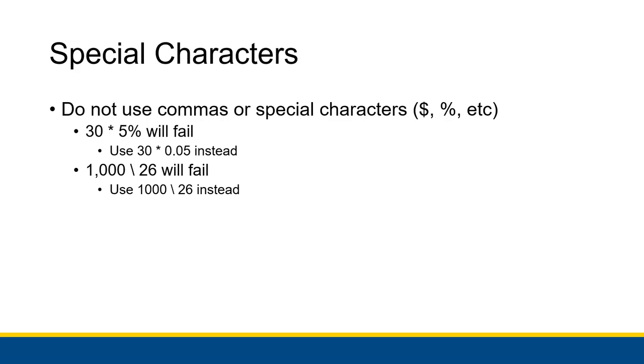Now with special characters, do not use commas or special characters in your regular numbers. For example, 30 times 5% will fail because it doesn't recognize 5% as a number. Instead, you have to use 0.05 instead of 5%. Similarly, 1000 integer divided by 26 will fail because of this comma right here. Even though you can convert it when you're doing the string try parse stuff, it doesn't work when you're actually typing in your numbers. So leave out your commas when you're typing in values inside of the code editor window.